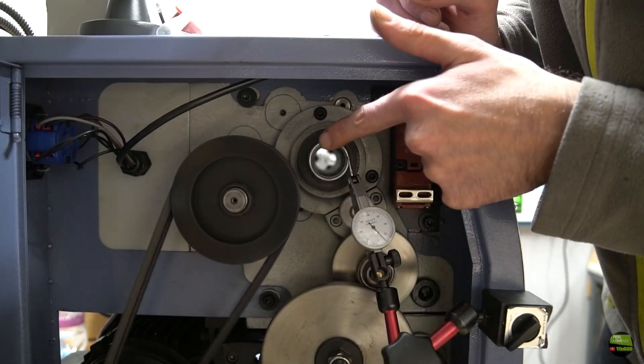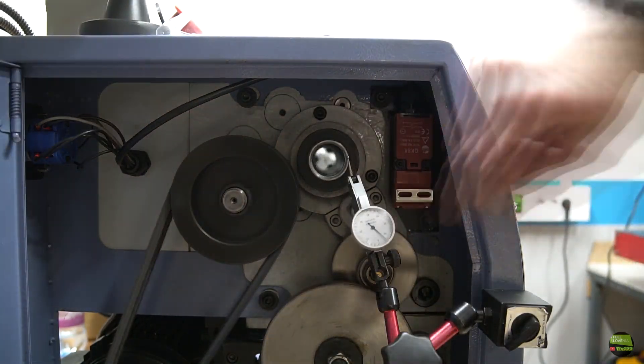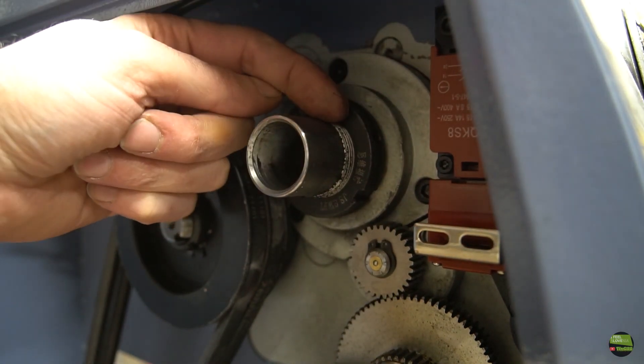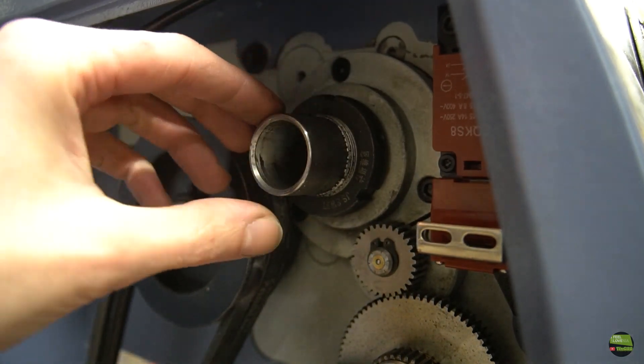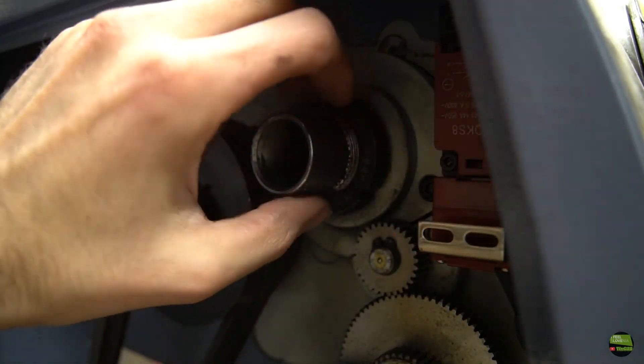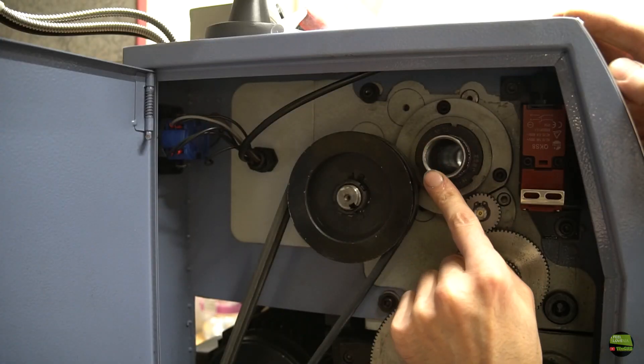But then I found out that the edge of the spindle has almost zero runout, and I also noticed some extra thread on the spindle for a bearing nut, so I decided to make a piece which will be screwed onto the spindle thread and tightened on the spindle edge.